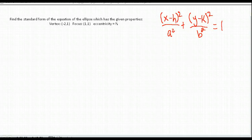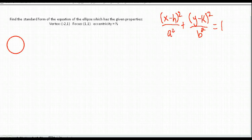They gave us the vertex, the focus point, and the eccentricity. Let's talk about what eccentricity is before we get going. Eccentricity is how much deviation you have in your ellipse. In a circle, the eccentricity is equal to one.